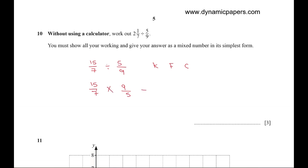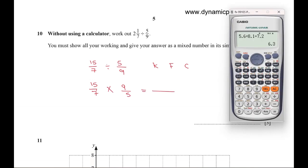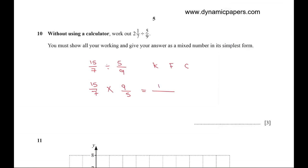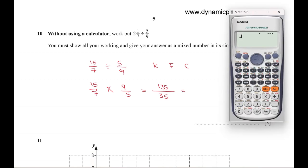Multiplying numerators: fifteen times nine equals 135. Denominators: seven times five equals 35. Now we will use a calculator to find it in simplest form. 135 over 35 equals 27 over 7.